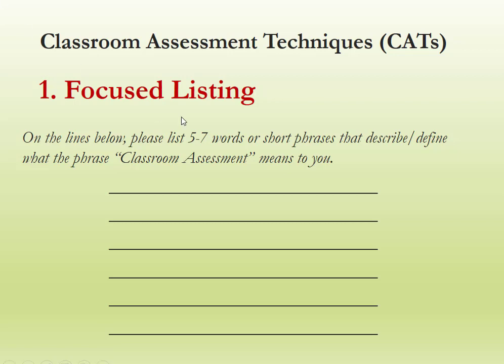The first technique is focus listing. In focus listing, you ask students to list five to seven words or short phrases that describe or define a particular concept — for example, what 'classroom assessment' means to them. You're not asking for a written definition; you're asking for five to seven keywords that can be used to describe classroom assessment. This strategy is called focus listing, in which we ask students to write five to seven keywords to define a particular concept.